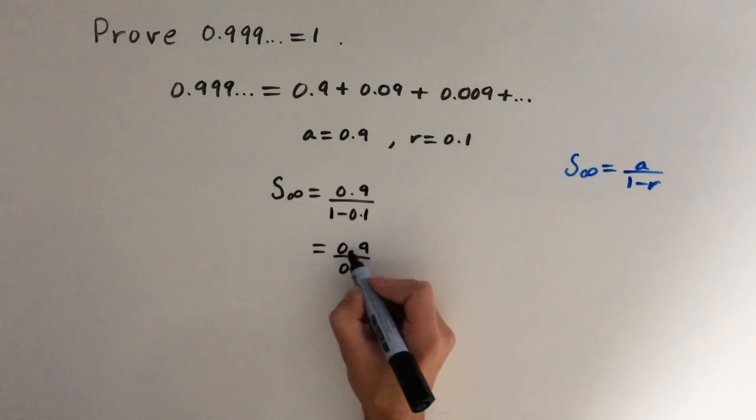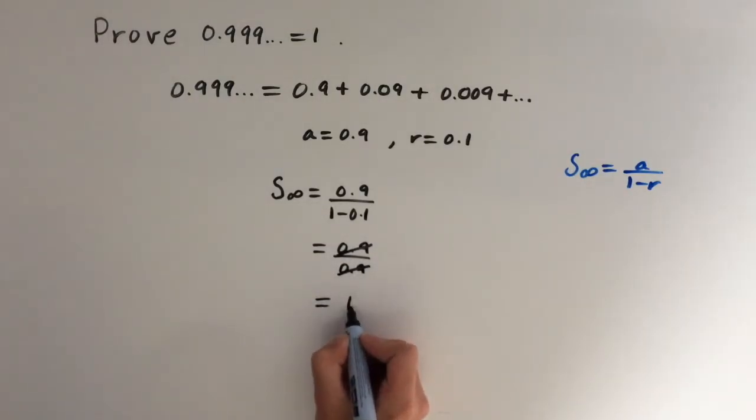And you can see these terms cancel out. So we're left with 1. Therefore 0.9 recurring is equal to 1.